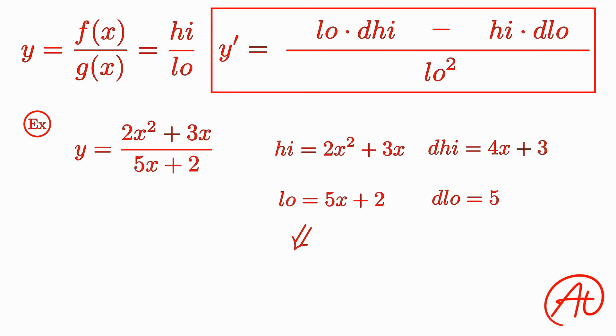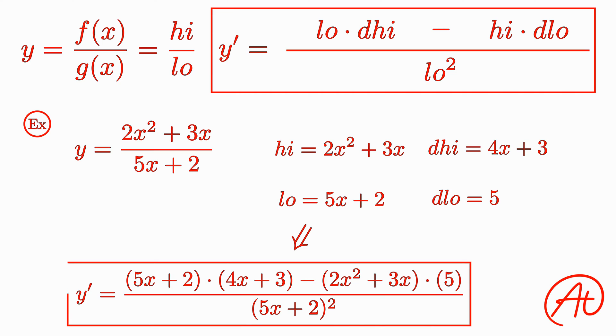We can then plug these into our Quotient Rule formula to get that the overall derivative is y prime equals 5x plus 2 times 4x plus 3 minus 2x squared plus 3x times 5, all over 5x plus 2 squared.